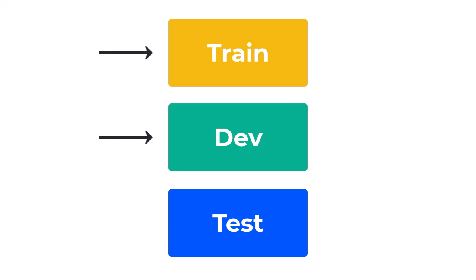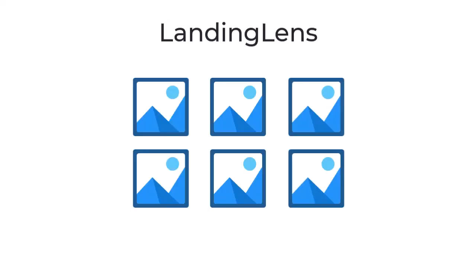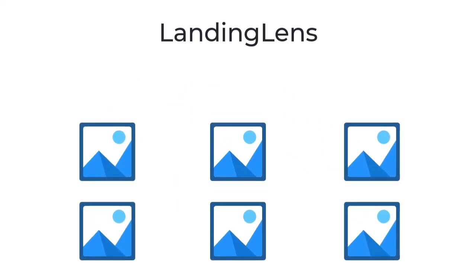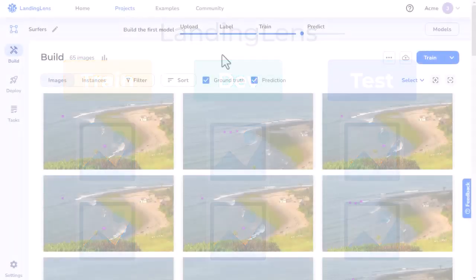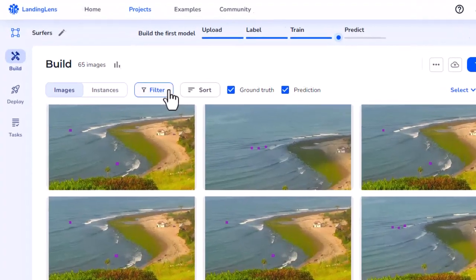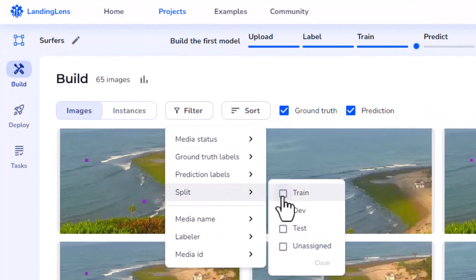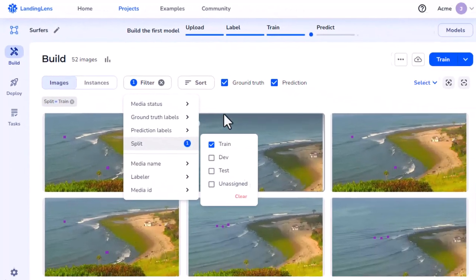Having the Train, Dev, and Test sets are part of building any machine learning model. In Landing Lens, images are automatically split into these datasets in this order during model training: Train, Dev, and Test. After you've trained a model, you can filter to see which images are associated with each dataset.